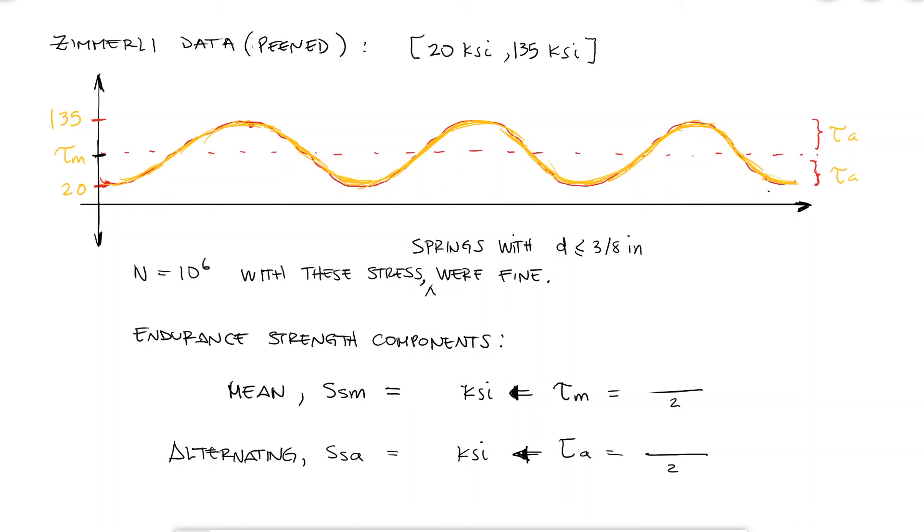For a peened spring, you would use an SSM value of 77.5 ksi and an SSA value of 57.5 ksi to find the torsional endurance limit SSE, instead of 55 and 35 respectively. The rest of the process is exactly the same.